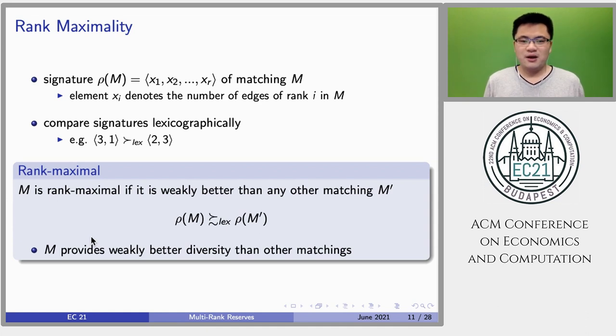We say a matching is rank maximal if it has weakly larger signatures than any other matching. Note that a rank maximal matching provides weakly better diversity than other matchings.